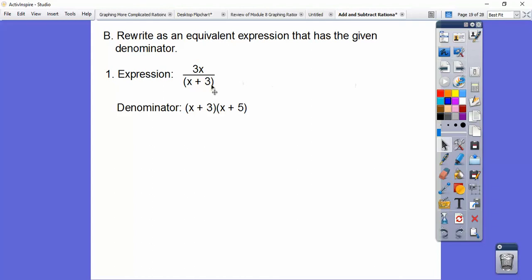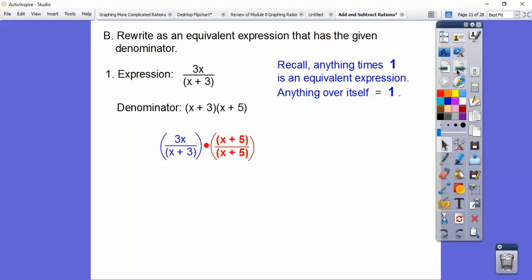So here's our rational expression: 3X over X plus 3. They want us to have this equivalent with the denominator X plus 3, X plus 5. So remember, anything times 1 is the same expression. And anything over itself equals 1. So what I'm going to do is I'm going to change the denominator so it has this additional expression in it. But if I put it in the denominator, I've got to put it in the numerator. Because this is 1 right here. Anything over itself equals 1.